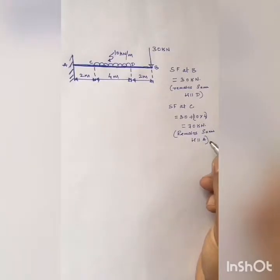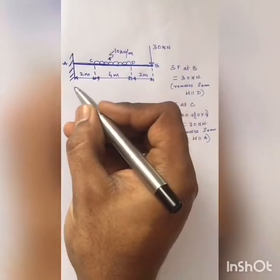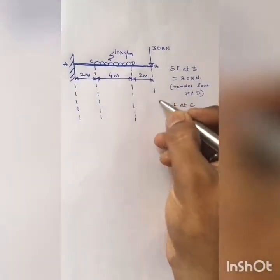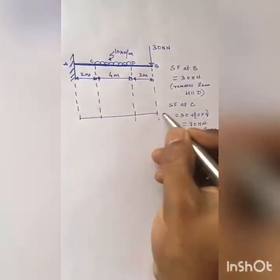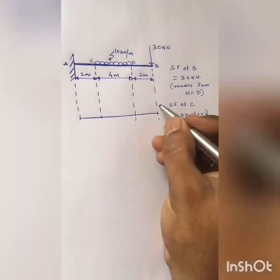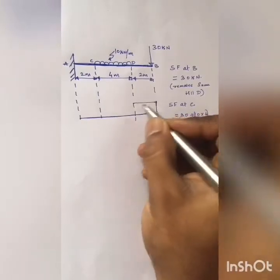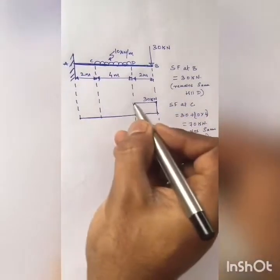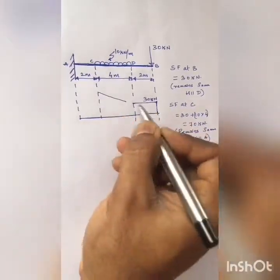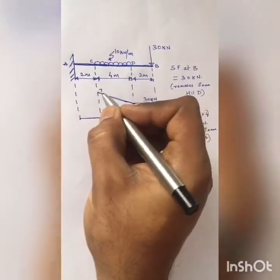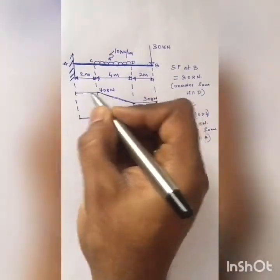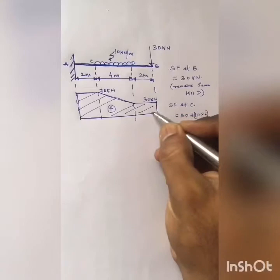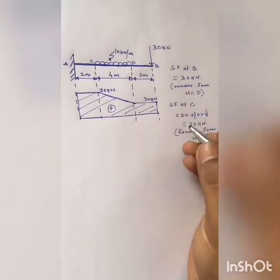Now I will draw the shear force diagram. Let me project the salient points through which I can represent the values of shear forces at those particular points. Let me draw the datum line — the line which represents zero. At point B the shear force is 30 kilo Newton and it remains constant to D, so I have drawn a constant line at 30 kilo Newton. There is a UDL from D to C, hence the shear force will be an inclined line from D to C — at D it is 30 kilo Newton and at C it becomes 70 kilo Newton. From C to A the shear force remains the same; it is constant. All values are positive. This is the SFD.